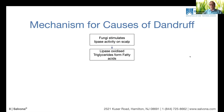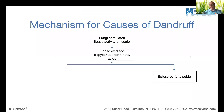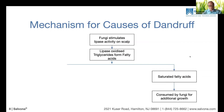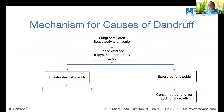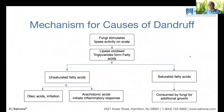Lipase accelerates the oxidation of triglycerides into different types of fatty acids. We get two types: saturated and unsaturated. The saturated fatty acids are consumed by the fungi — they continue to grow, so it is the best food for the fungi. The unsaturated fatty acids are our enemy. They divide into two groups: arachidonic acid, which initiates an inflammatory response causing redness, and oleic acid, which specifically causes the irritation.